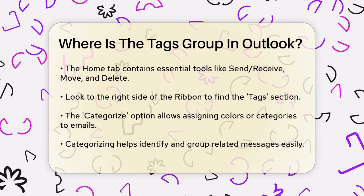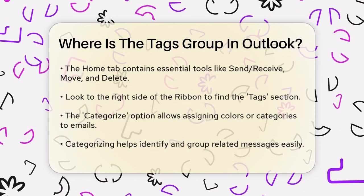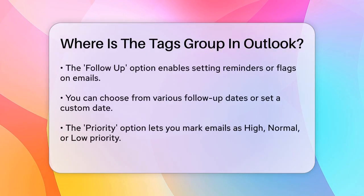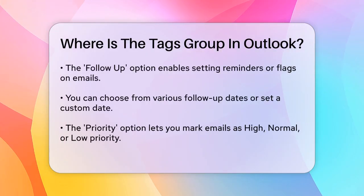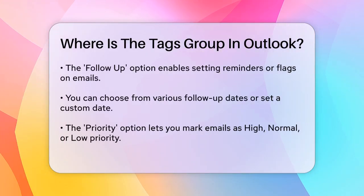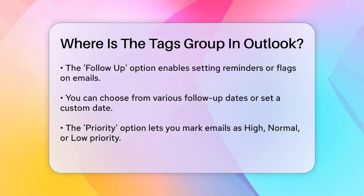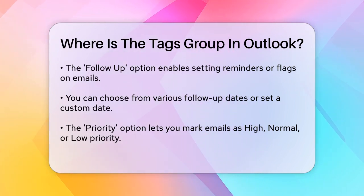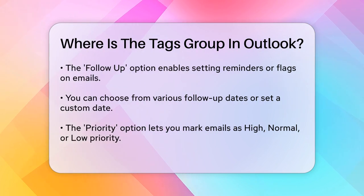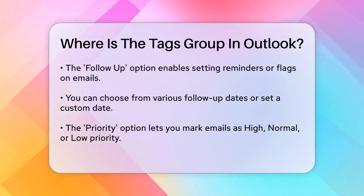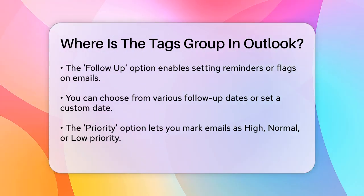The Follow-up option is handy for setting reminders or flags on emails that require action. You can choose from various follow-up dates or set a custom date. The Priority option lets you mark emails as high, normal, or low priority, which can help you focus on the most important messages first.